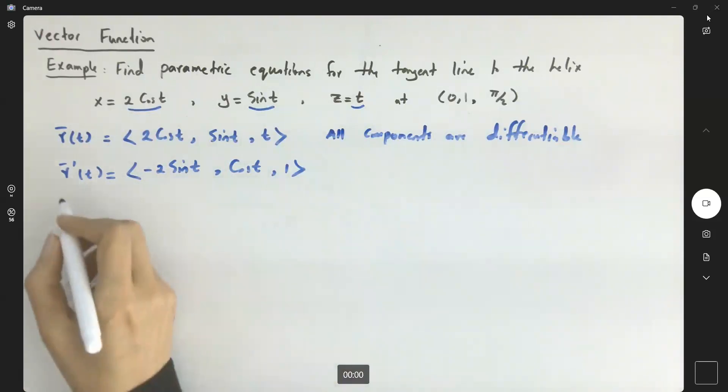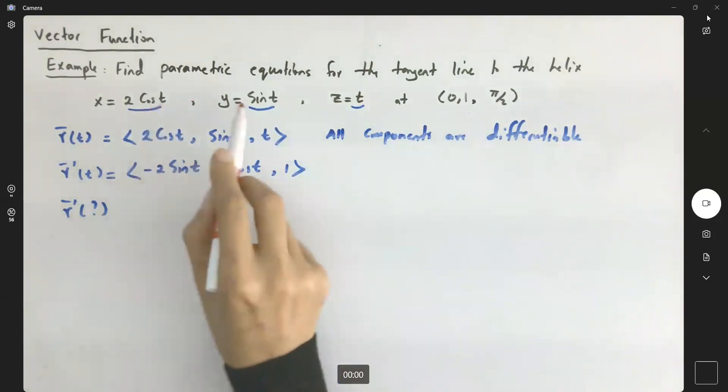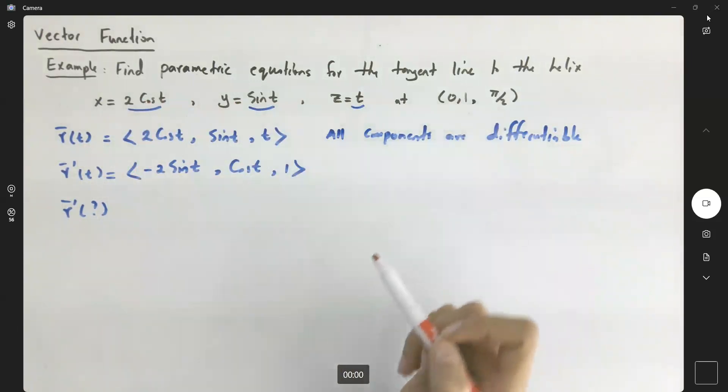Now, what is r prime of this specific t value? How do I find this t? To find t, we're going to go back to the position function and use the values.